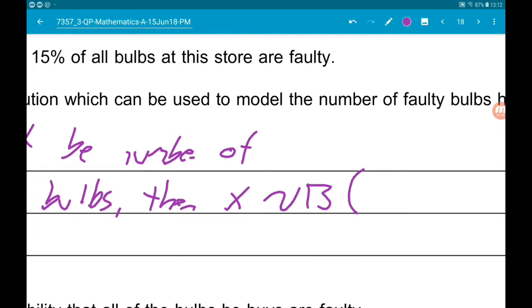Now N is the number of bulbs, so 6. P is 15%, 0.15. Cool.